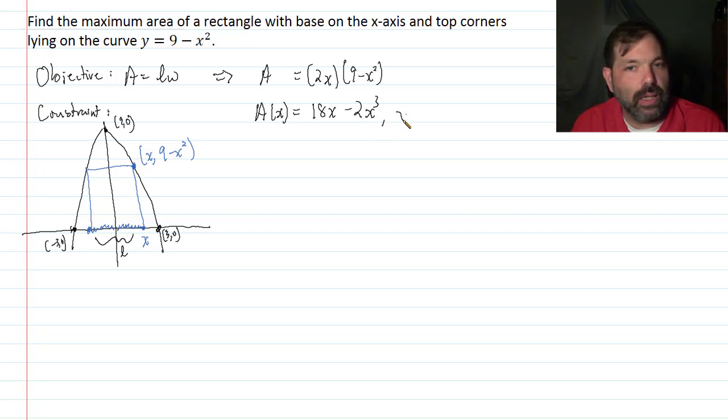And let's see, x has got to be positive. And x has to be, actually, we can be more specific. x must be between 0 and 3. If x was 0, we wouldn't have a rectangle. If x was 3, we wouldn't have a rectangle.